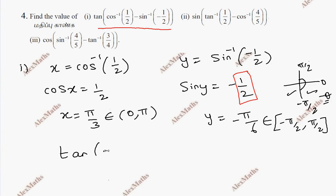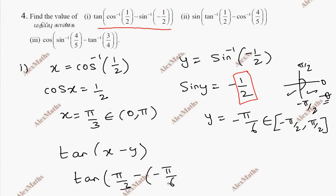So this is the value of x and y. Now tan of x minus y — tan of x, whose value is π/3, minus of minus π/6.